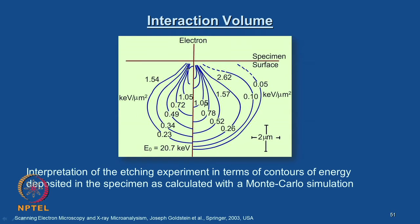As mentioned, the left-hand side contours are based on experiments and the right-hand side contours are based on Monte Carlo simulations estimated numerically. It is very interesting to note the energy variations from the surface to the bottom. This gives us some idea about how inelastic scattering signals are useful in obtaining information about materials in SEM, such as secondary electrons, backscattered electrons, and characteristic X-rays.